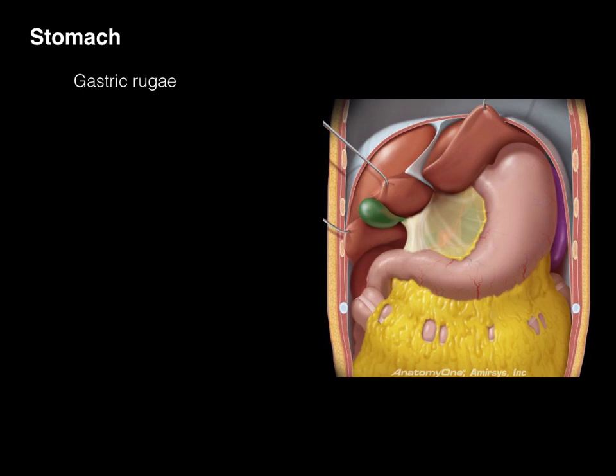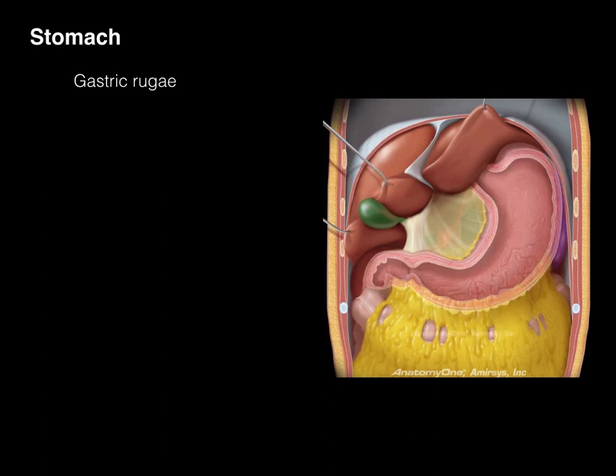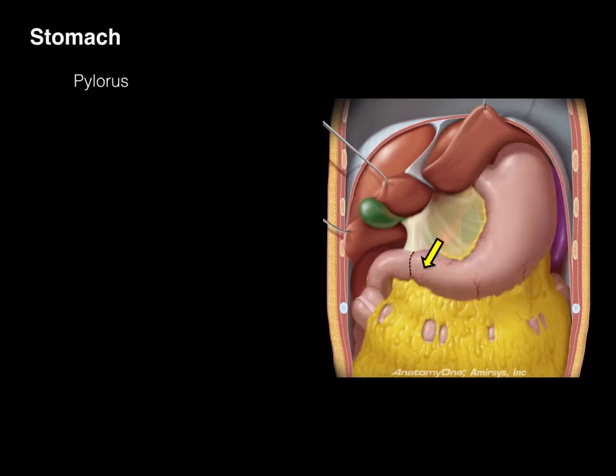Internally — if we take an imaginary scalpel and cut open the stomach, removing the front in a coronal section — we can see these gastric rugae, ridges that help to expand the stomach so it can get bigger when we eat.